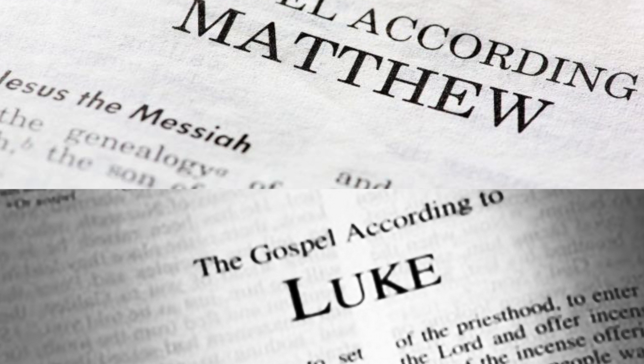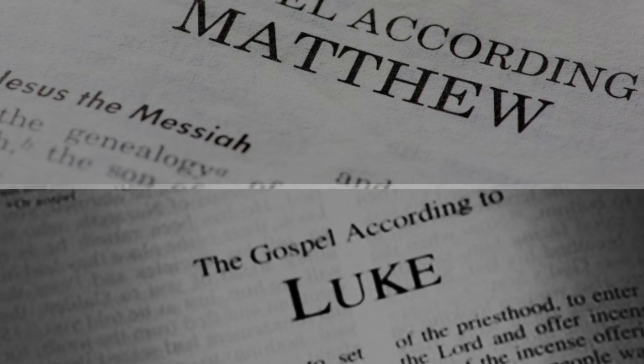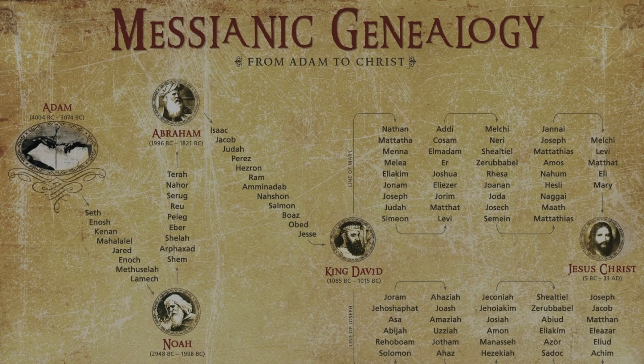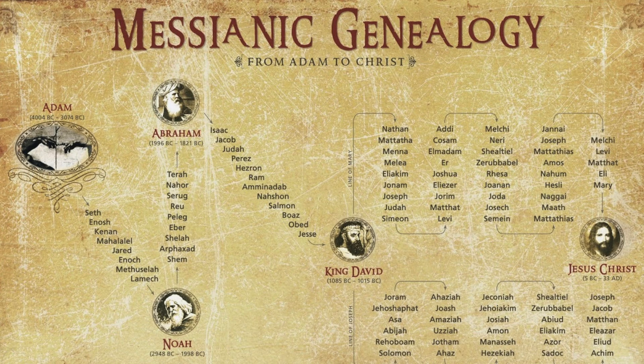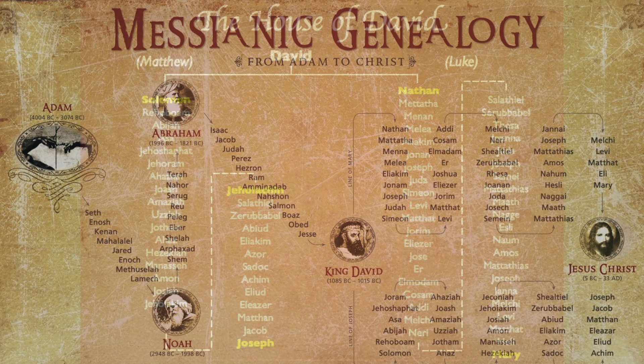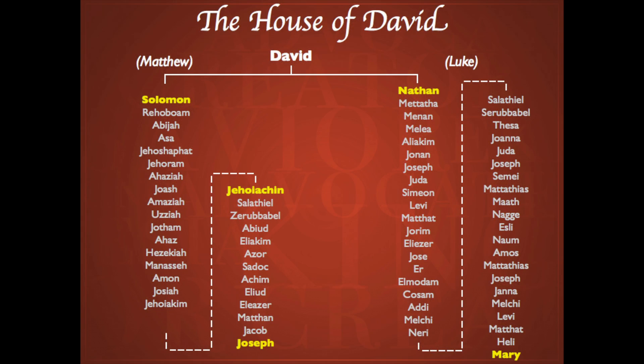The first appearance of Joseph is in the Gospels of Matthew and Luke, from around 80 to 90 A.D. Each contains the genealogy of Jesus, showing ancestry from King David.